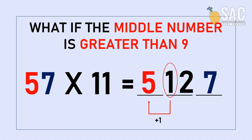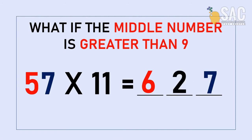5 plus 1 is 6, so you'll replace 5 with 6. Then for our middle number, since we gave 1 to the front, we only have 2 left, so it will be 627.